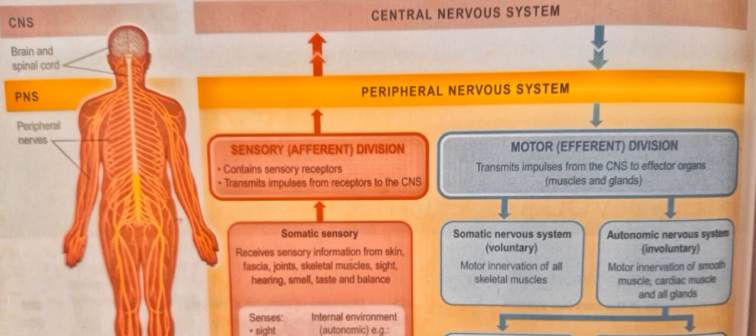The Somatic Nervous System handles motor innervation of all skeletal muscles. For example, moving your hand is because of skeletal muscles — that is completely voluntary. The Autonomic Nervous System handles motor innervation of smooth muscle, cardiac muscle, and all glands. Heartbeat is under autonomic control — we don't have voluntary control over it. That is involuntary. Smooth muscles such as those in the urinary bladder are also autonomic.